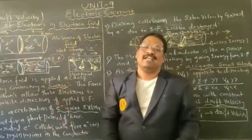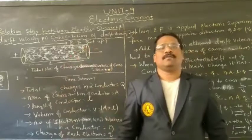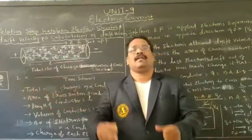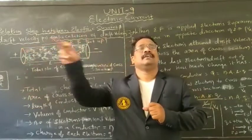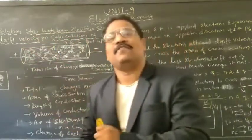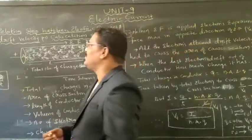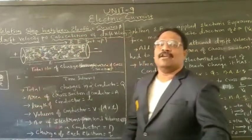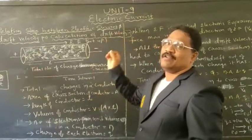We have completed the concept of drift velocity — that is, the behavior of electrons in electric field. In the presence of an electric field, the electron attains a drift nature, changes its direction, and moves in one specified direction. That velocity is called drift velocity. Now we are going to frame a relationship between electric current and drift velocity, and calculate drift velocity Vd.